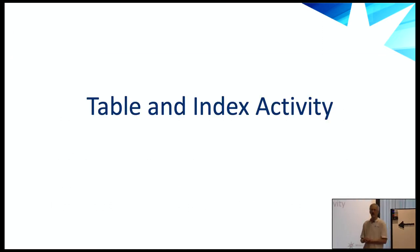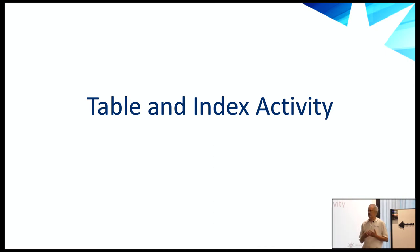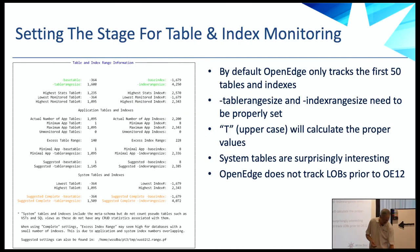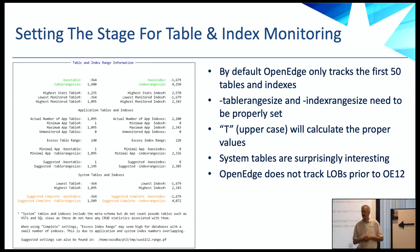Another topic interesting to developers is getting a handle on table and index activity. Your database activity is primarily tables and indexes. The reporting of table and index statistics is not automatically enabled by default — Progress only enables the first 50 tables and indexes in your database. Most databases have way more than 50 tables and even more indexes than that. The sports database fits within 50 tables, but real databases tend to have a lot more.